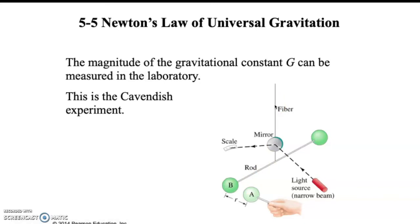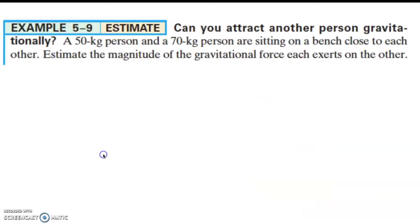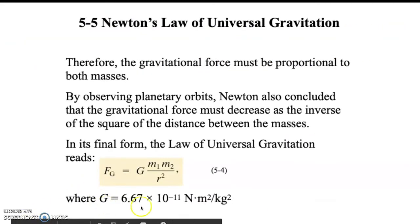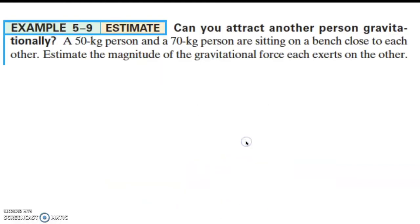But the big thing is that from his experiment, that's where this constant comes from. Most calculators have this constant. If not, write it down. This is Cavendish's constant, big G, and it's in the universal law of gravitation.